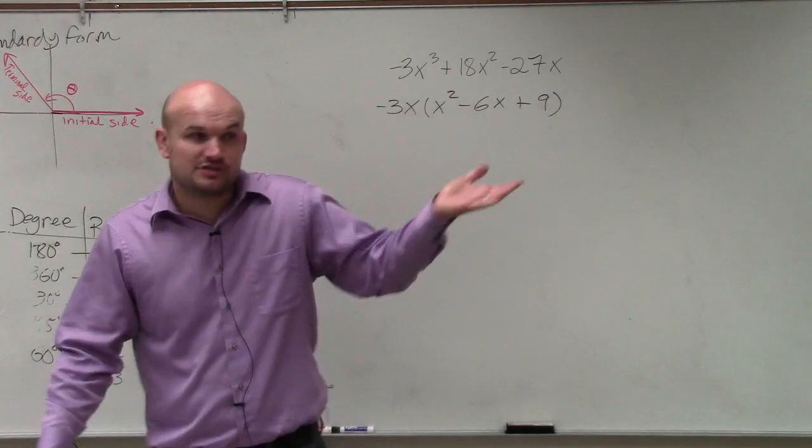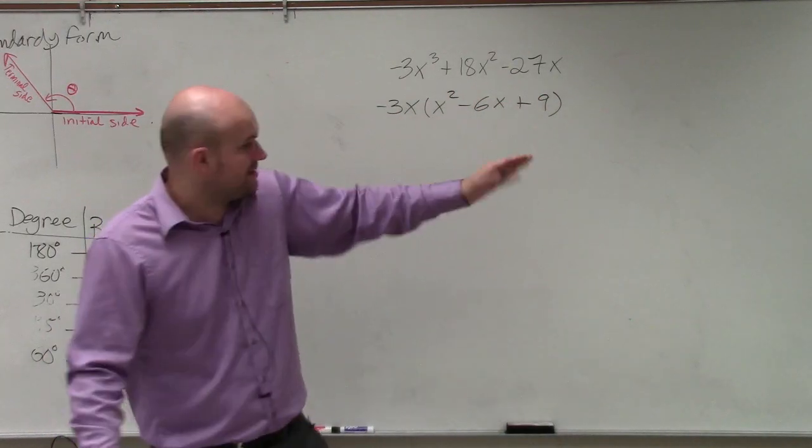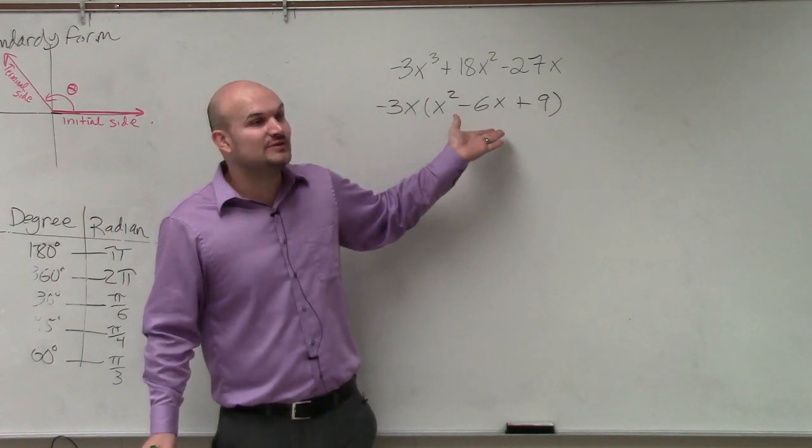Then, what we simply want to do is say, all right, well, we have this trinomial. Can we further factor this down? What two numbers multiply to give you 9, but then add to give you negative 6?